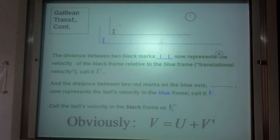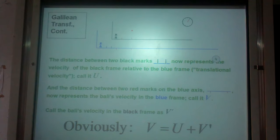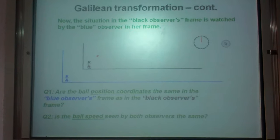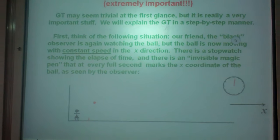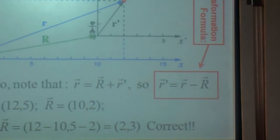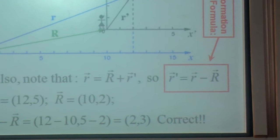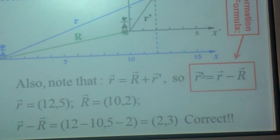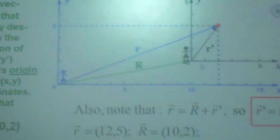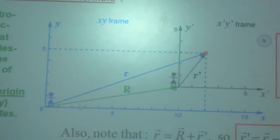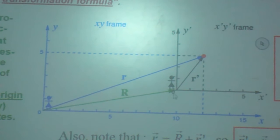So ball's velocity in the black frame is V prime. What was the formula we got in the last lesson? R prime is equal to R minus R dash. R plus R dash is R. What is R? This plus that means this frame of reference plus this frame of reference is equal to R. So use that relation.